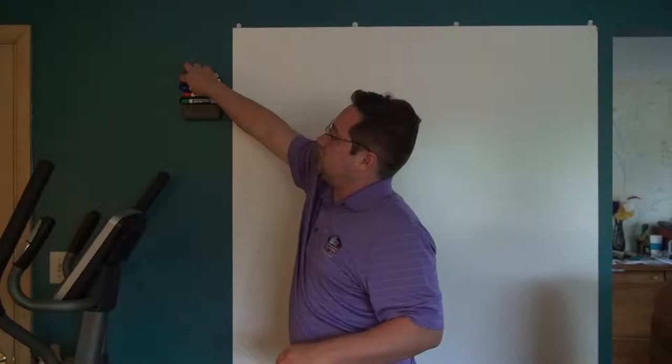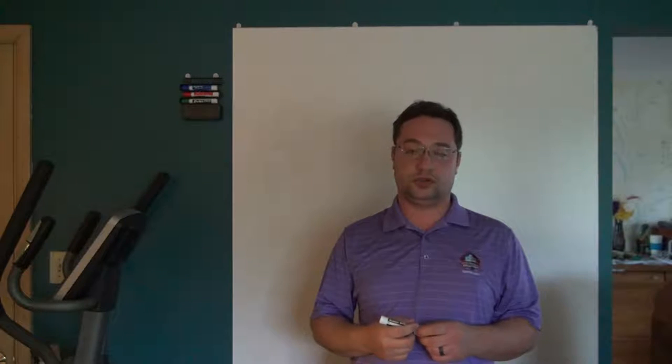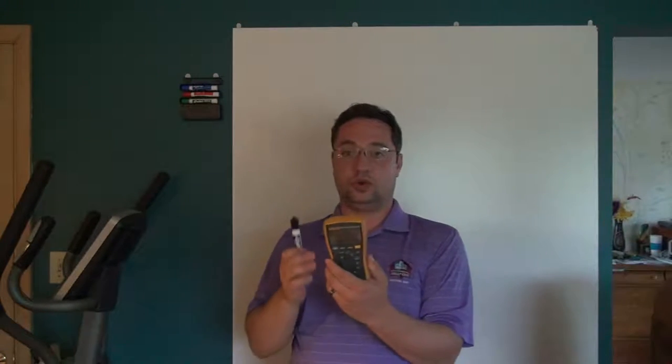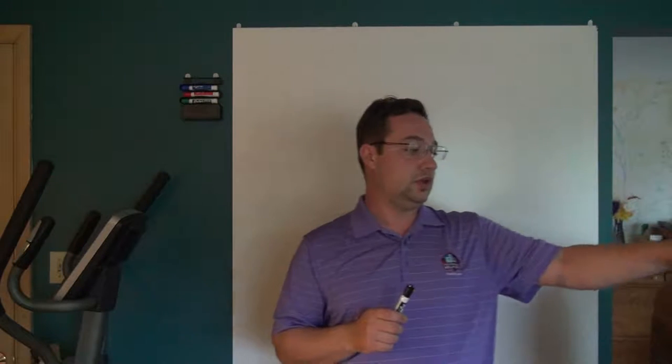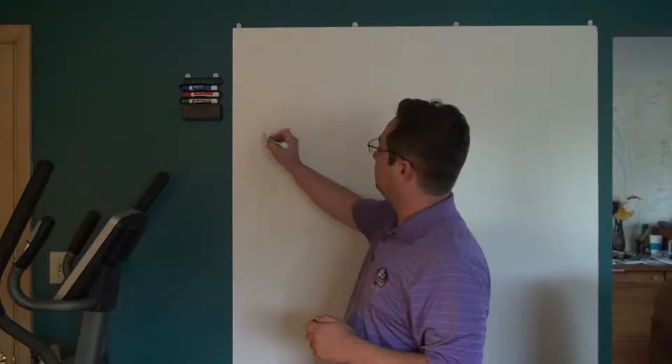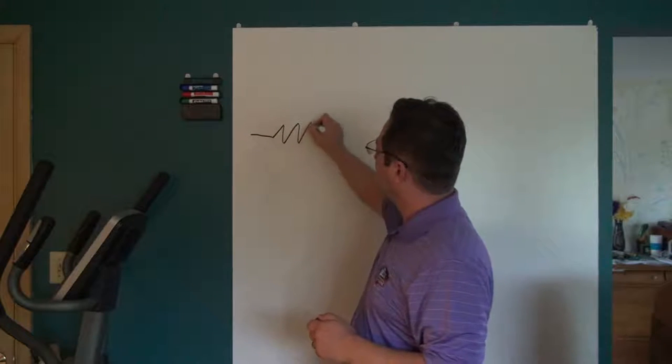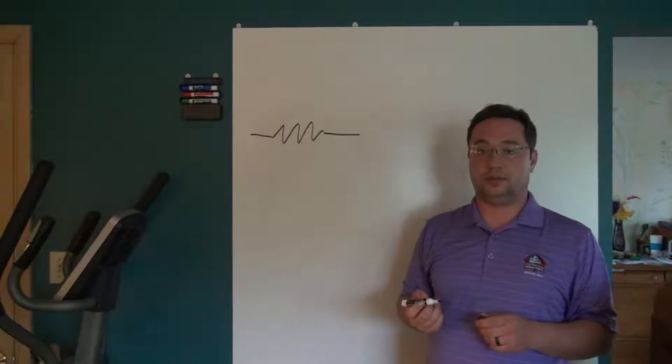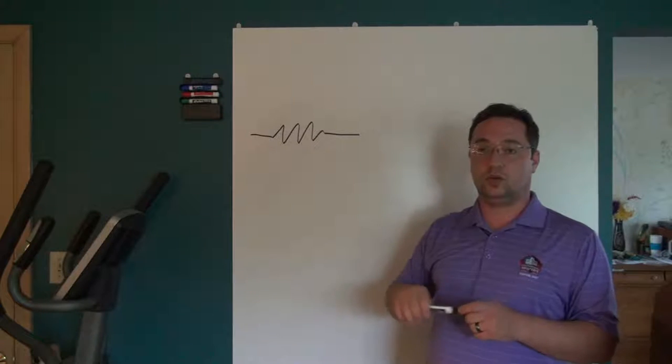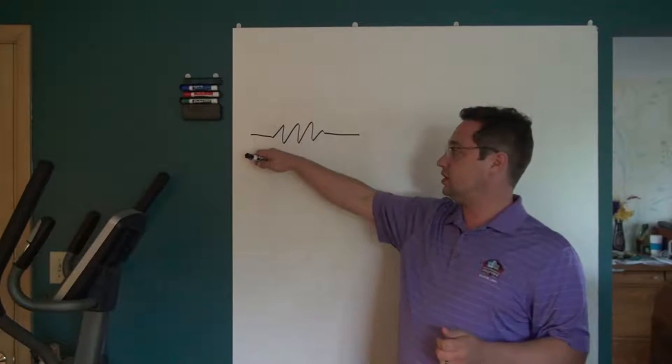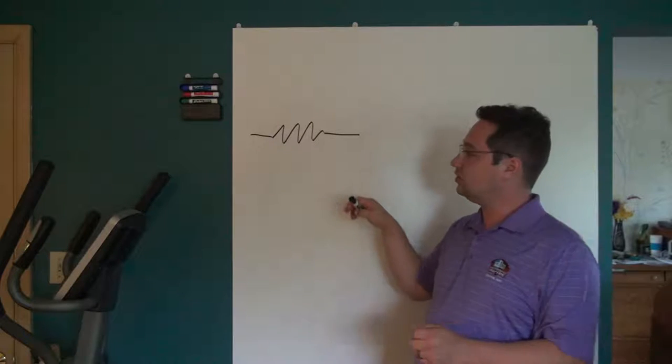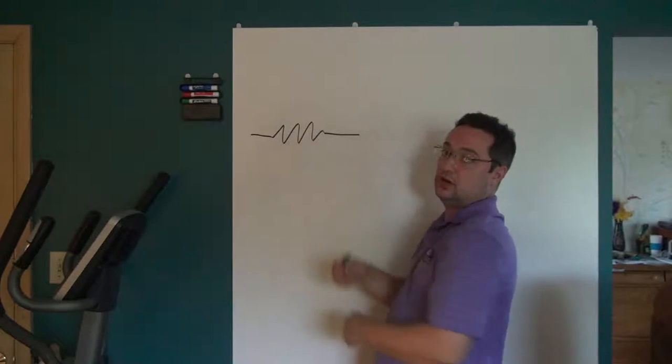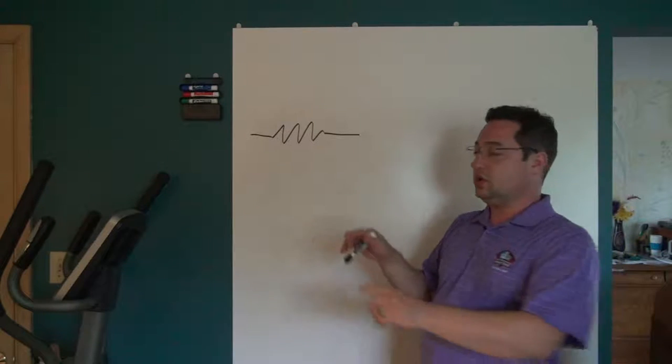The way meters like this measure current is with a shunt resistor. These meters are really good at measuring voltage, and they're leveraging that ability to measure current. So, inside the meter you have a resistor. And what Ohm's Law tells us is that when there is a current flowing through this resistor, a voltage drop develops across this resistor.